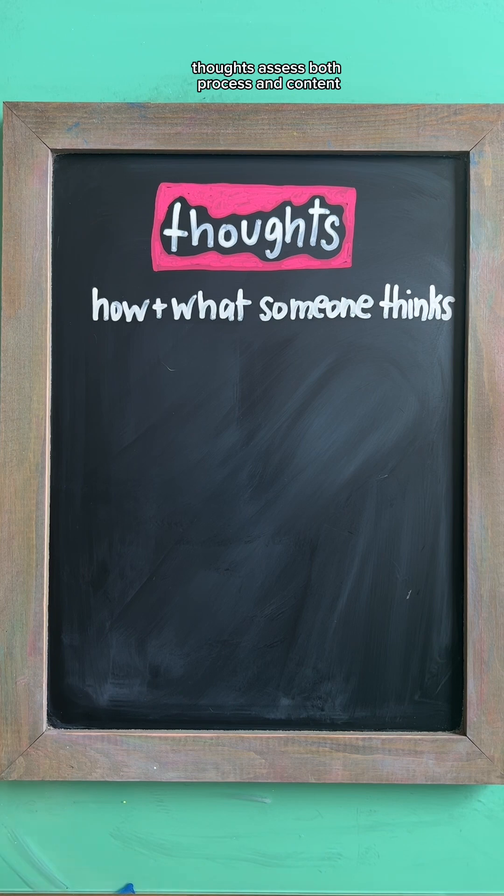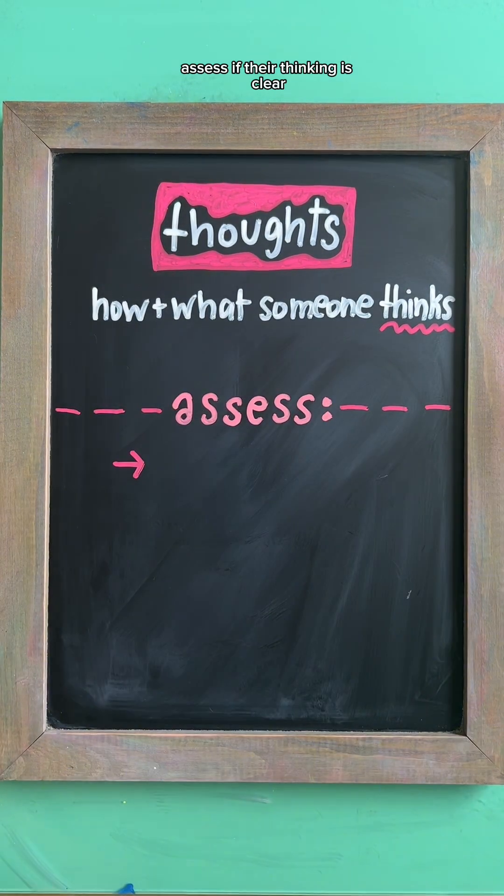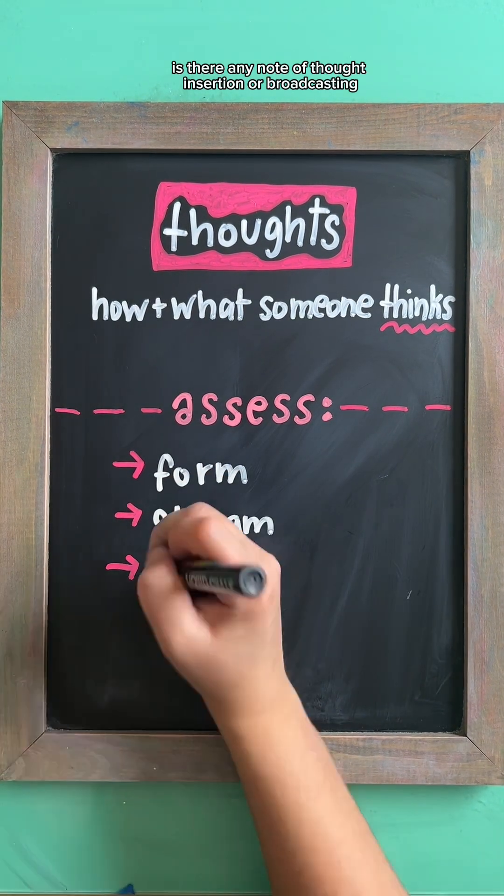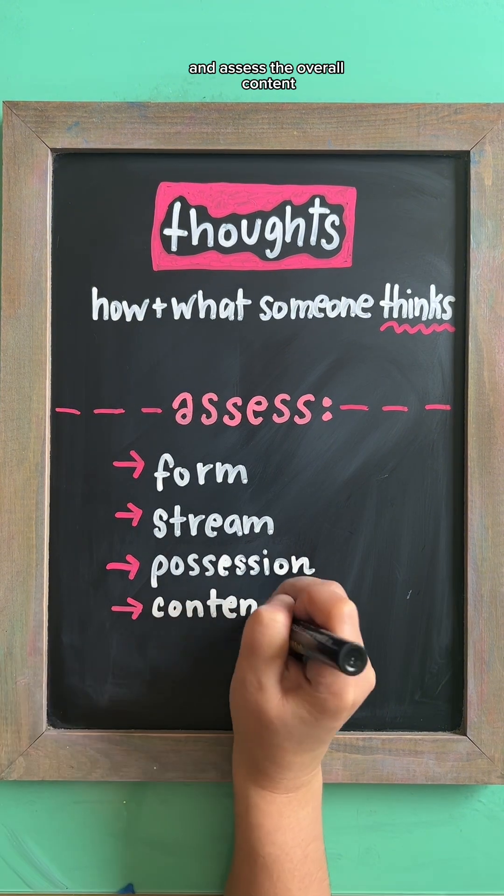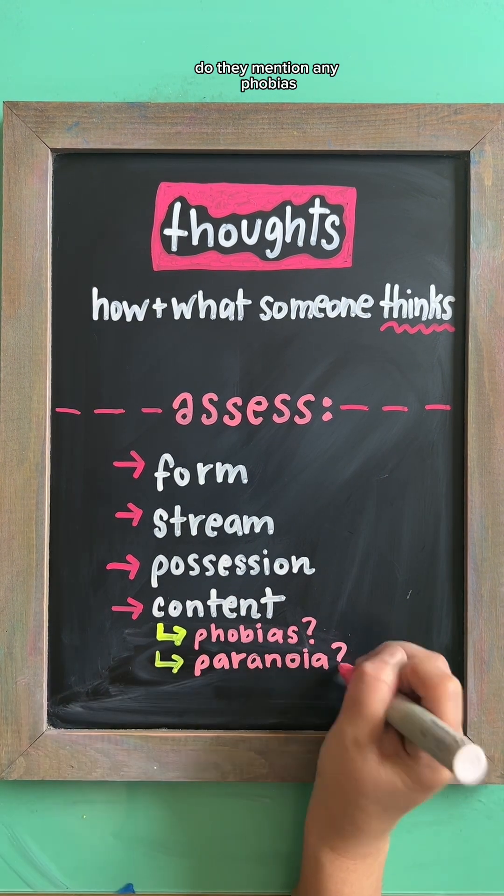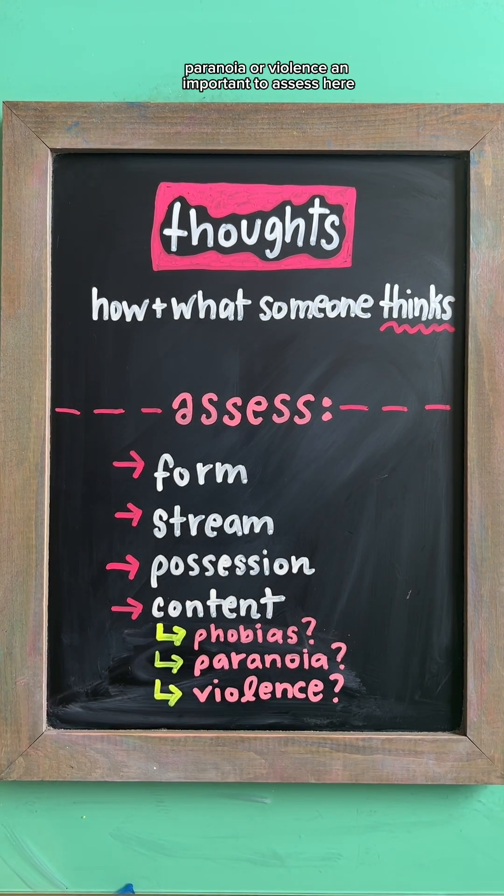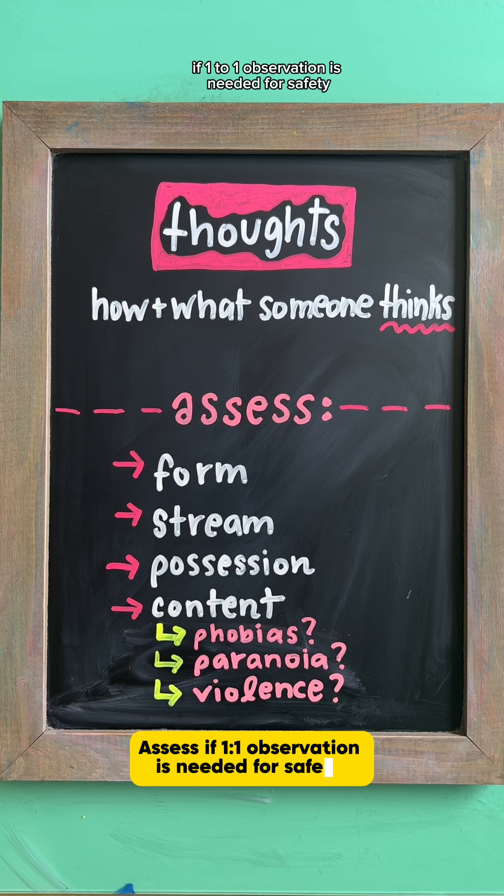Thoughts assess both process and content. Assess if their thinking is clear, flowing naturally. Is there any note of thought insertion or broadcasting? And assess the overall content. Do they mention any phobias, paranoia, or violence? And important to assess here if one-to-one observation is needed for safety.